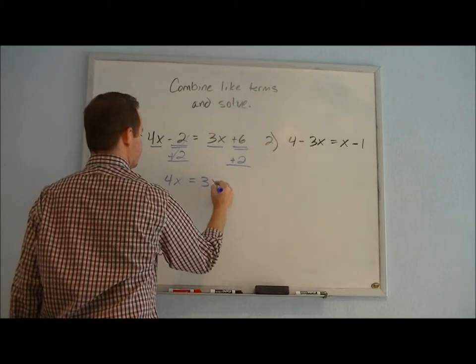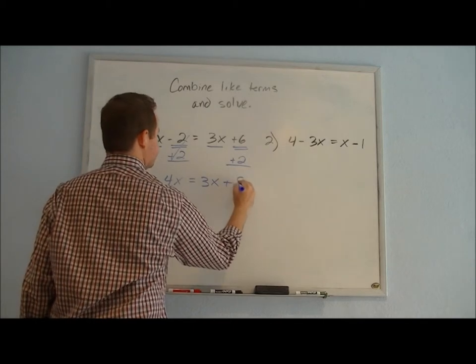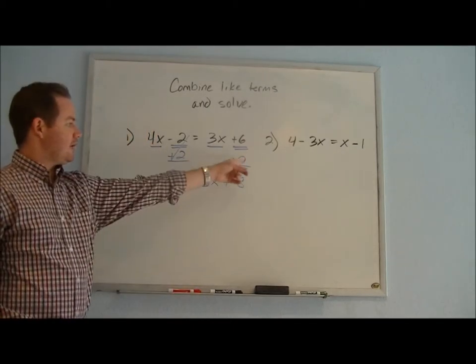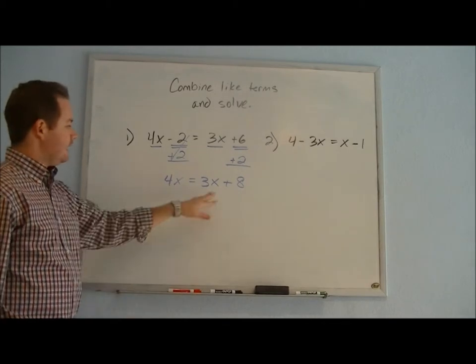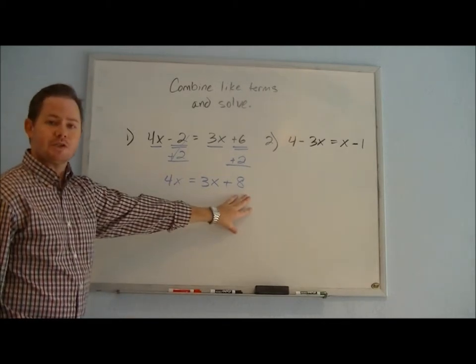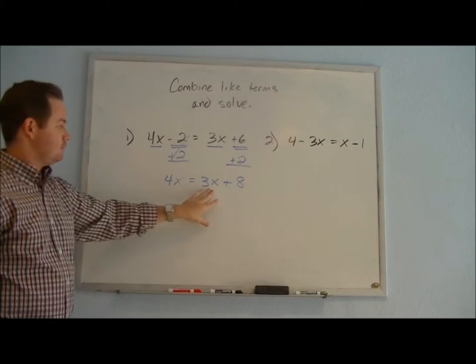We've combined the 6 and the 2, we've combined those like terms. Now we want to leave the number on one side and get all forms of the variable to the other side.